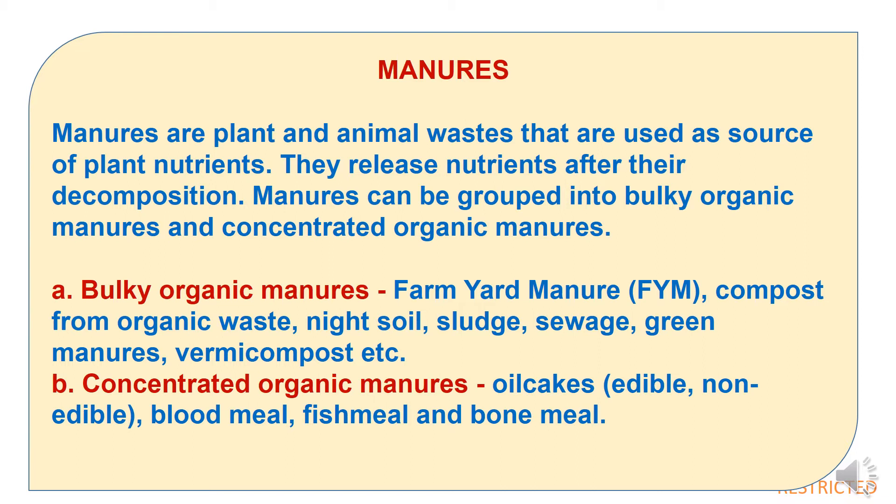The second group is concentrated organic manures, which includes oil cakes — both edible and non-edible — extracted from oil seeds, then blood meal, fish meal, and bone meal, etc.